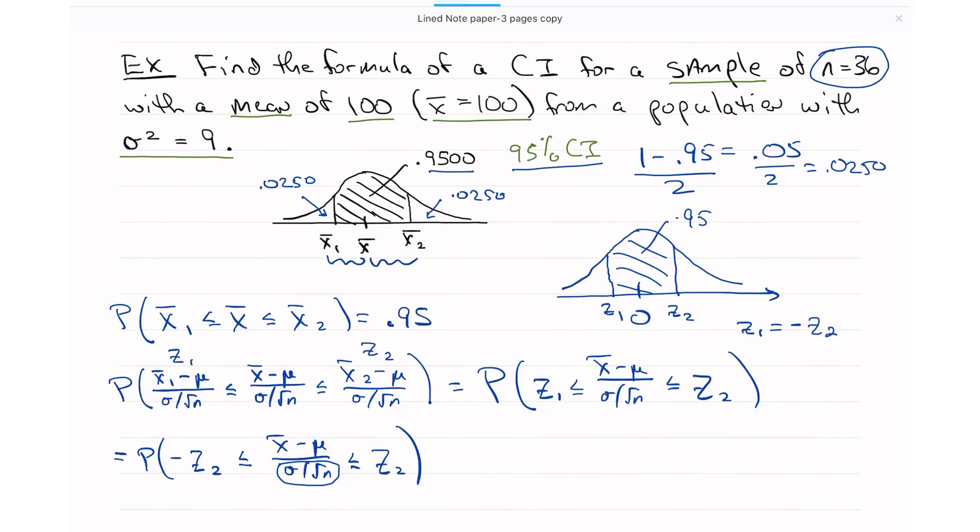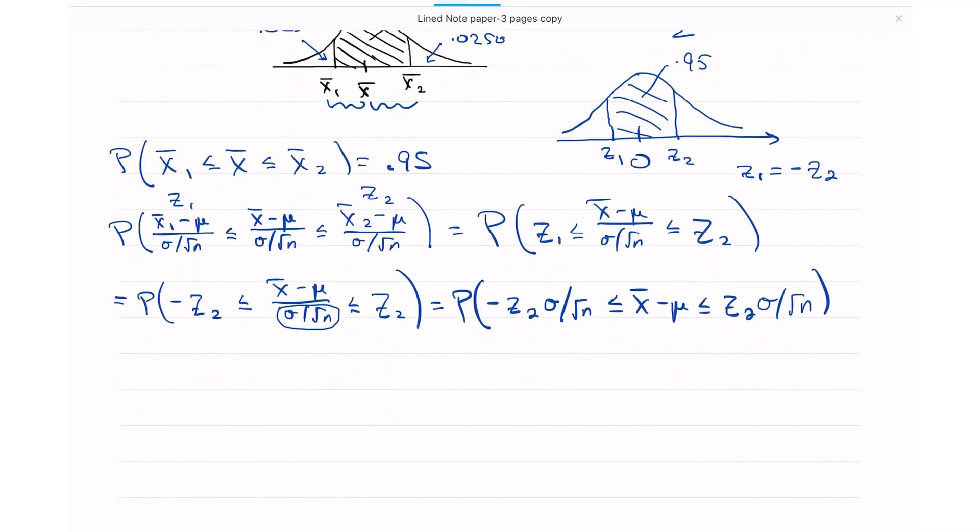I'm going to multiply all three sides by the denominator here. It's going to cancel out in the middle. This gives me the probability negative z2 times sigma divided by the square root of n. This will just leave x-bar minus mu in the middle. And this will be positive z2 sigma square root of n. I'm going to subtract x-bar from all three portions because I need to get mu by itself.